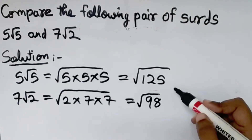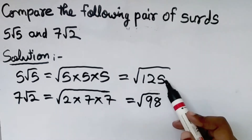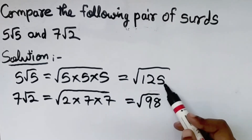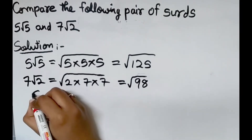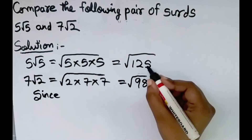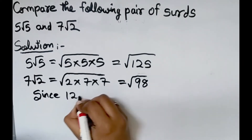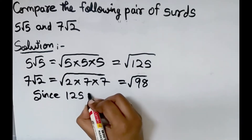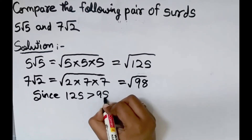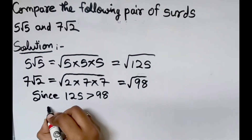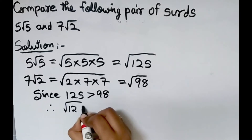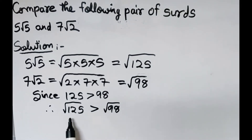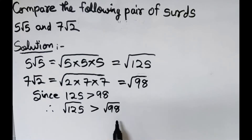Now we compare these two numbers: 125 and 98. Since 125 is greater than 98, therefore square root of 125 will be greater than square root of 98. If 125 is greater than 98, then square root of 125 is greater than square root of 98.